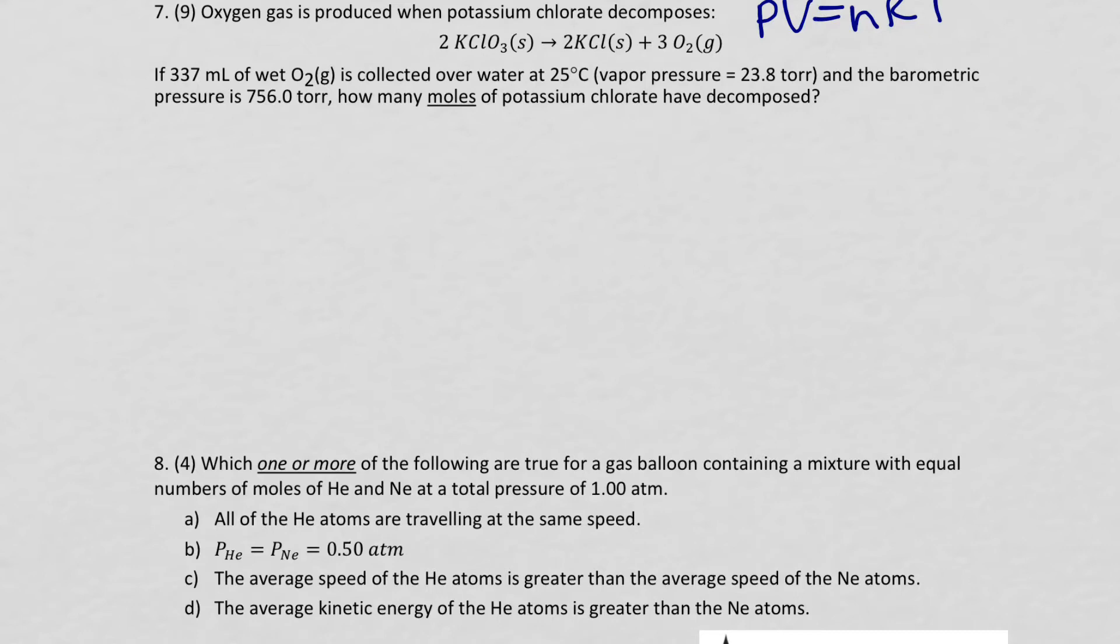I'm actually going to increase this size a little bit. But let's get going. So at first, the first thing I'm noticing when reading this problem, so let's just read it first. If 337 mL of wet O2 gas is collected over water at 25 degrees Celsius, which has a vapor pressure of 23.8 torr, and the barometric pressure is 756.0 torr, how many moles of KClO3 have decomposed? Now you'll notice it says potassium chloride. I read it as KClO3.